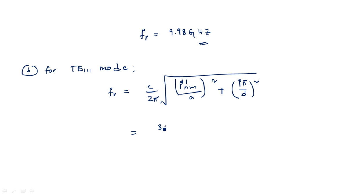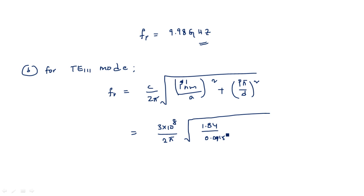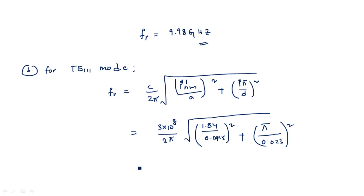For TE111 mode, using C = 3 × 10⁸ m/s, P'_nm for mode 11 is 1.84 (from the table), A = 0.0115 m, p = 1, and D = 2.3 cm = 0.023 m. After substitution and simplification, the resonant frequency is approximately 10.04 GHz.